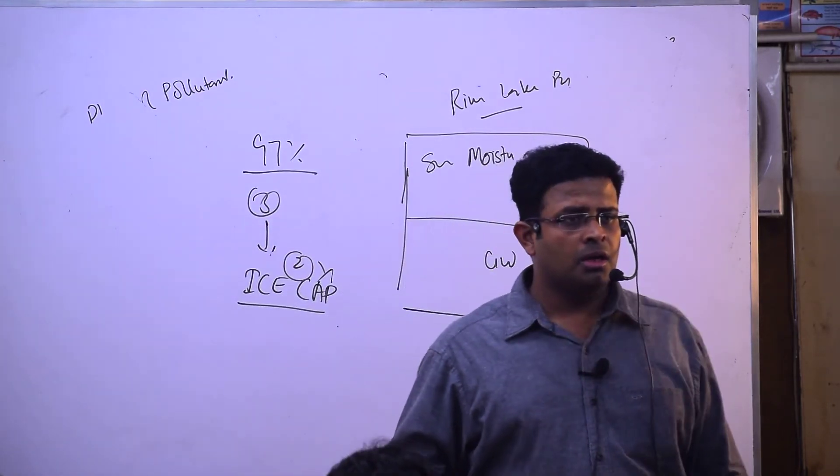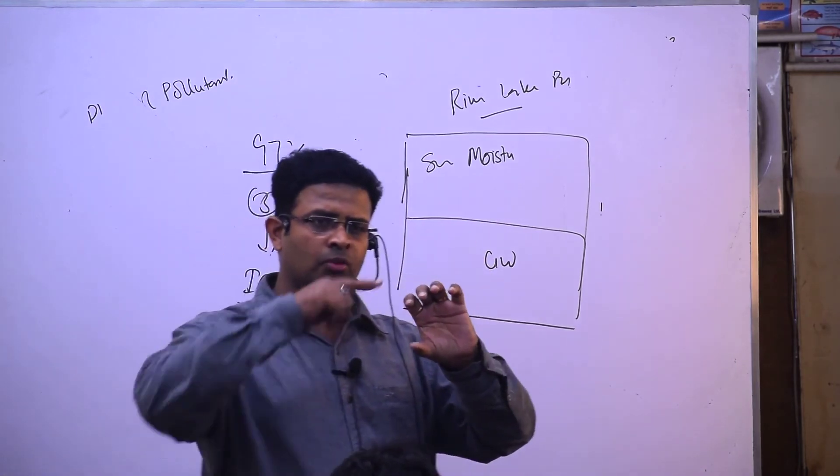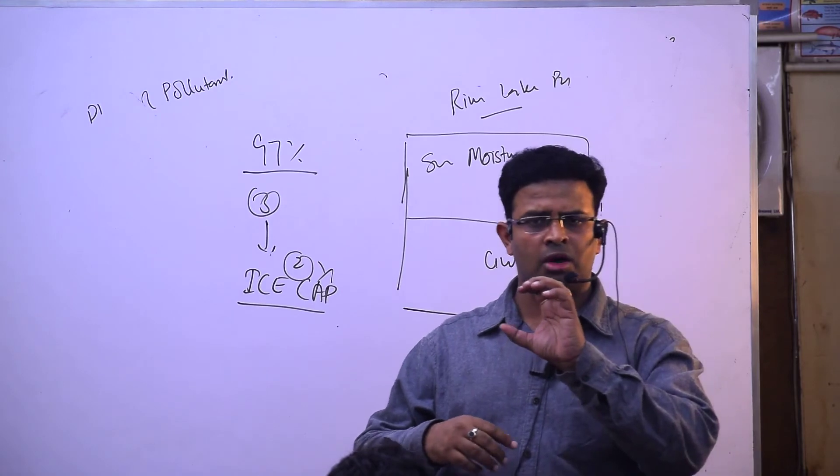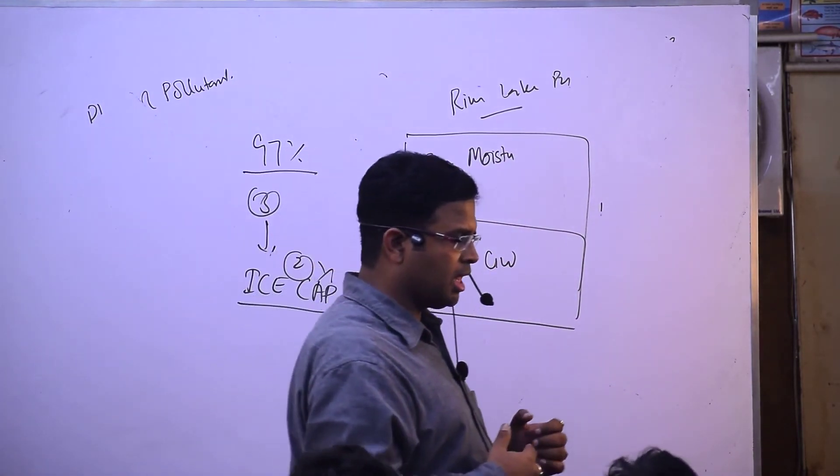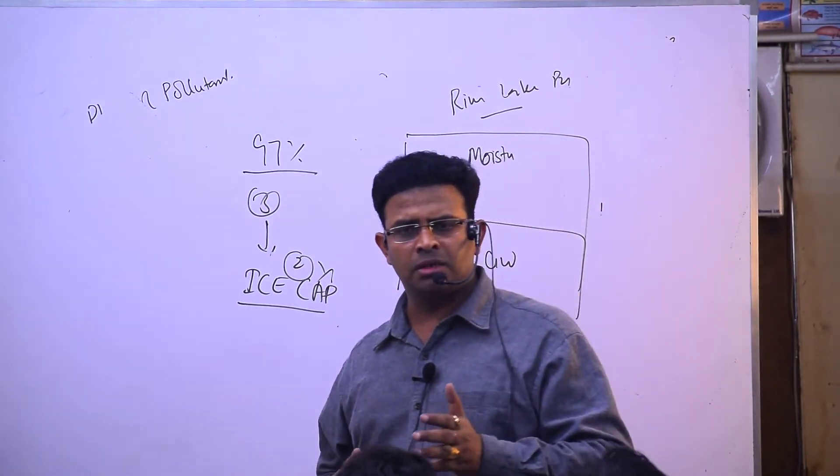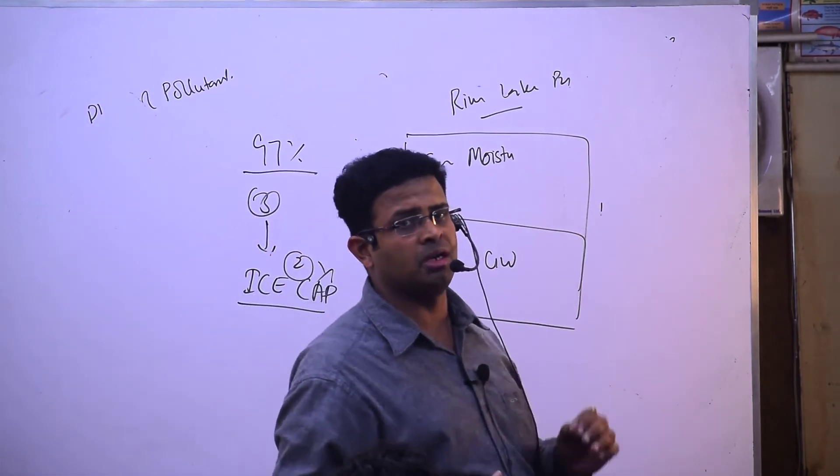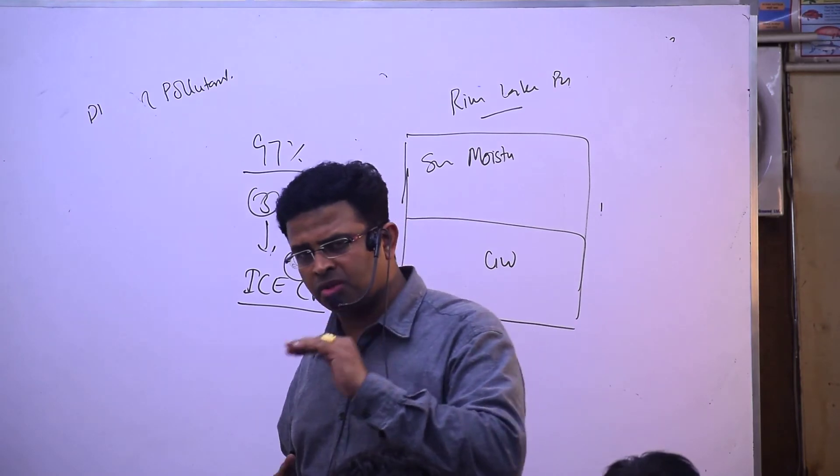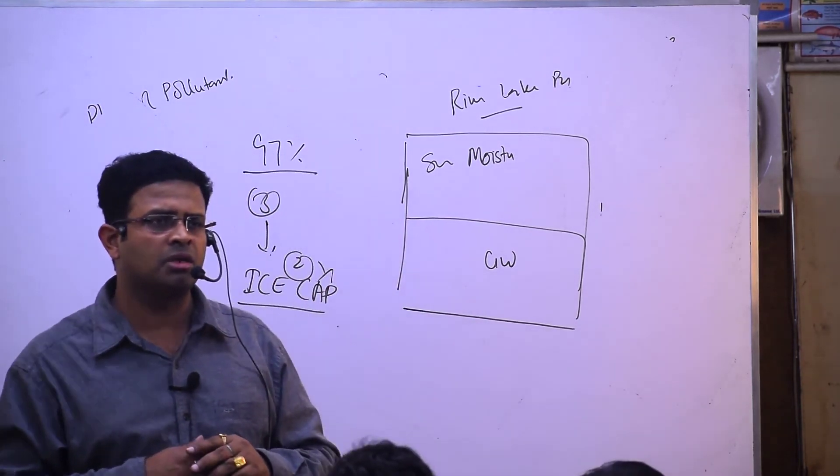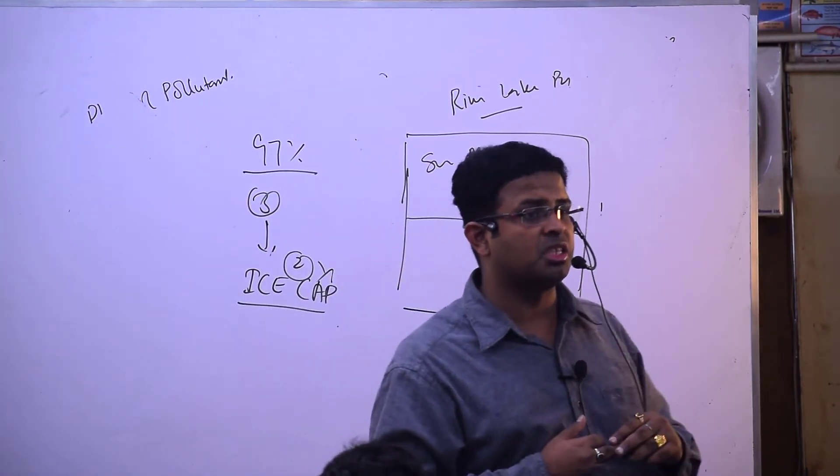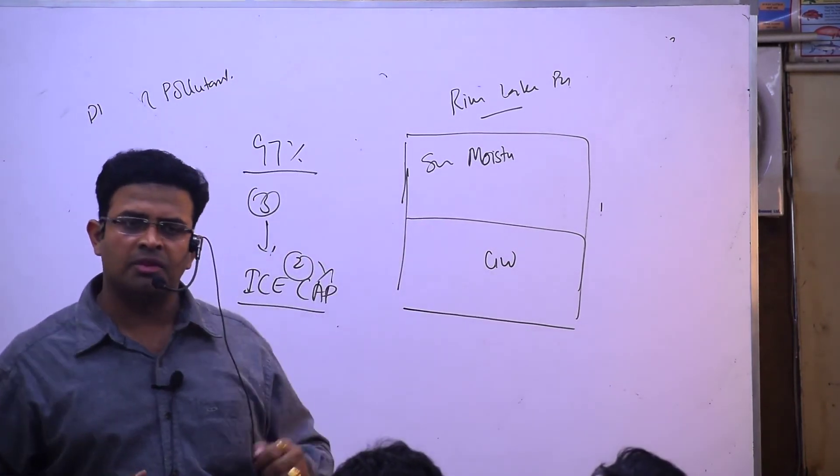Homeostasis is stable equilibrium maintained between internal and external environment. Whatever the physiography, you must maintain yourself. Organisms can regulate through osmoregulation and thermoregulation. Some organisms cannot regulate - 99% are conformers that try to remain in the same conditions.